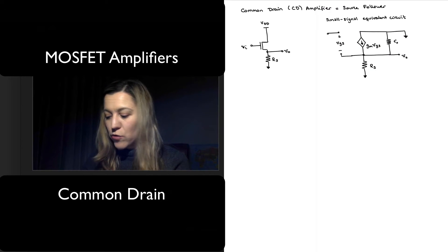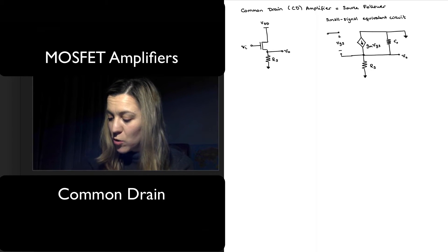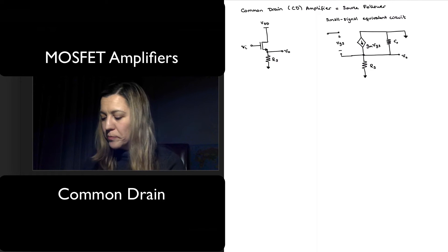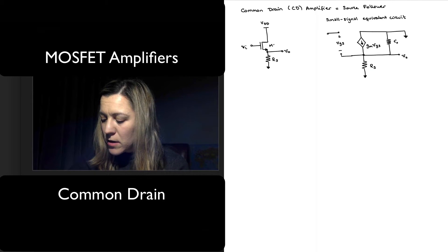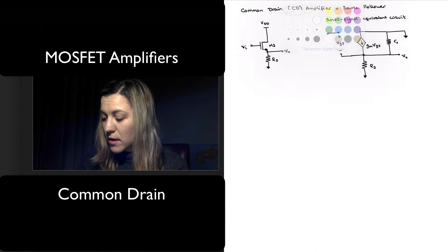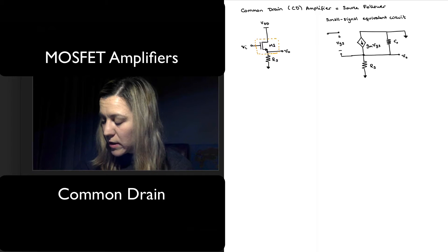And so I have drawn the basic structure of a common drain amplifier, this will be an NMOS transistor M1, and I have also drawn the small signal equivalent circuit. You can see how I have replaced the transistor M1 with its model.